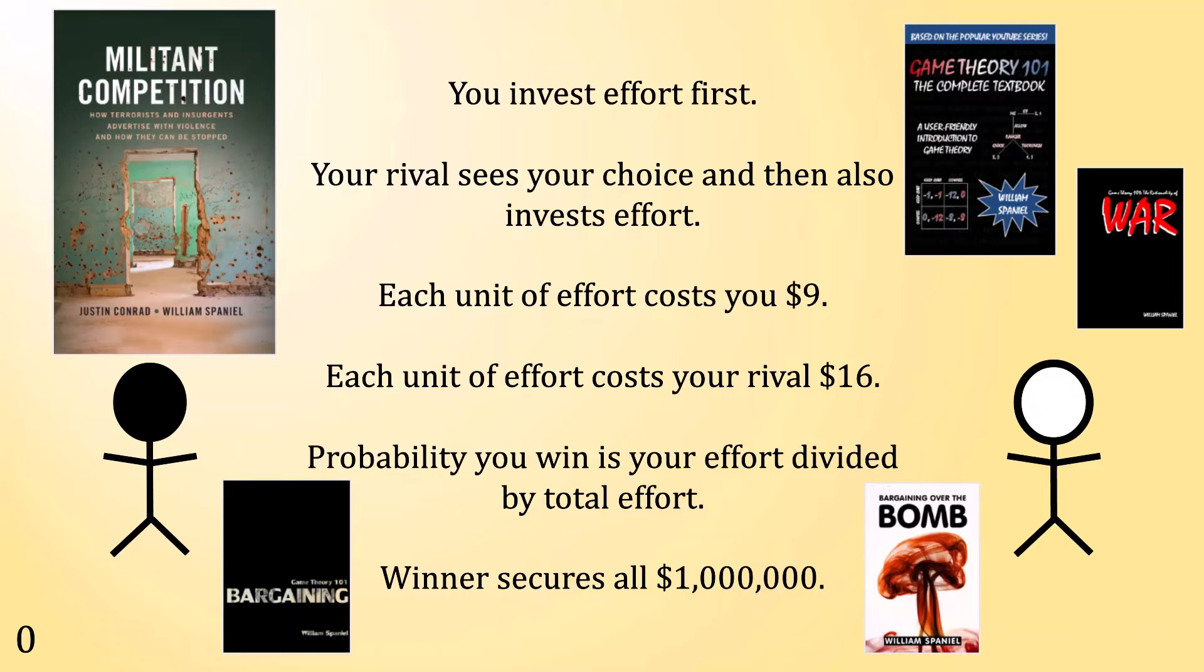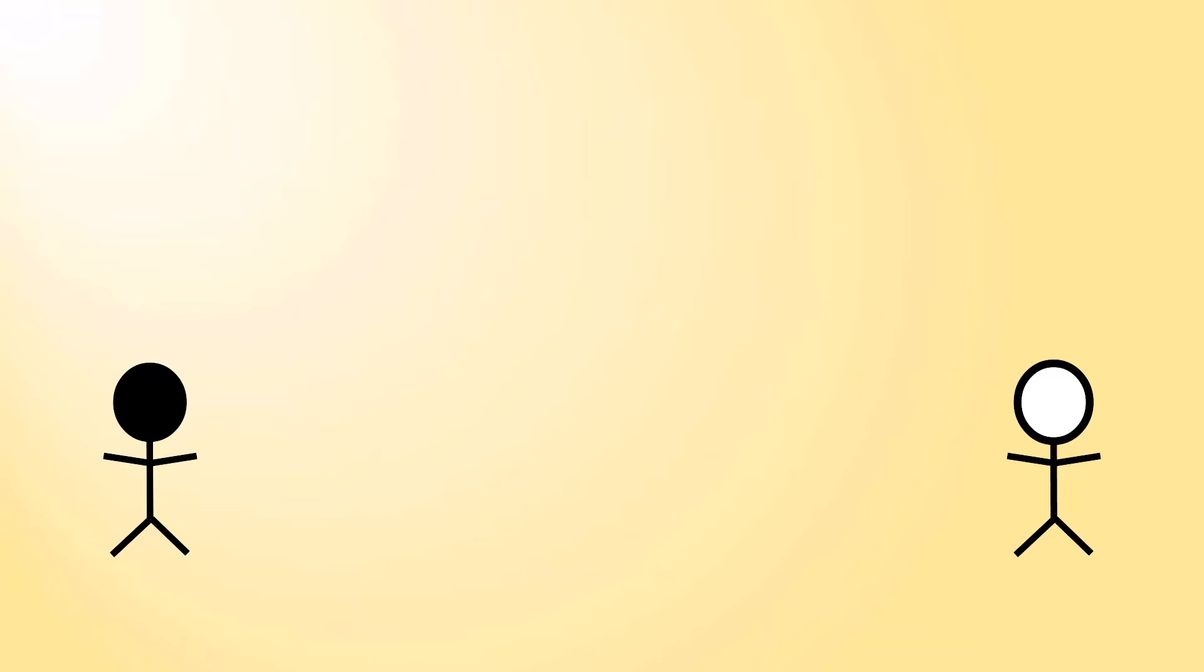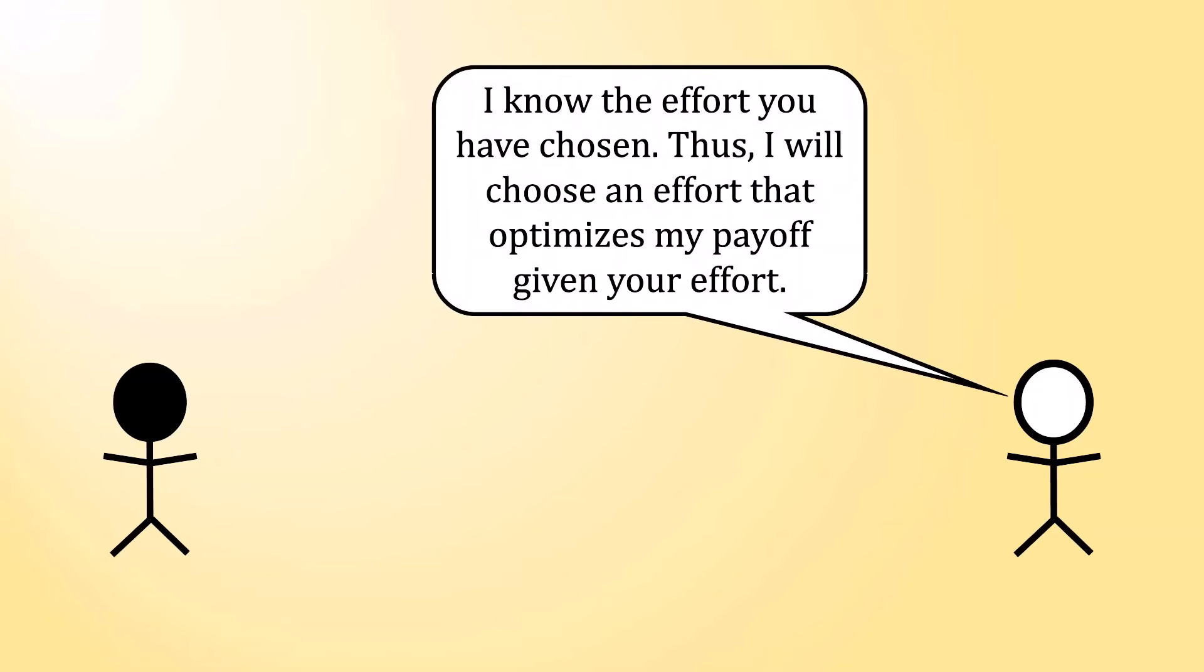Are you ready for the solution? As I offered as a hint, the key to this game is backward induction. Think about this from your rival's standpoint. The rival can reason that they know the effort that you have chosen. And thus, they can choose an effort that optimizes their payoff given what your effort is. In turn, the first step toward solving this problem is to write down what your rival's payoff function looks like.